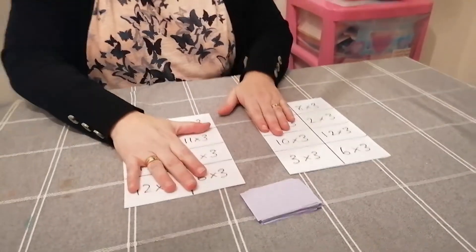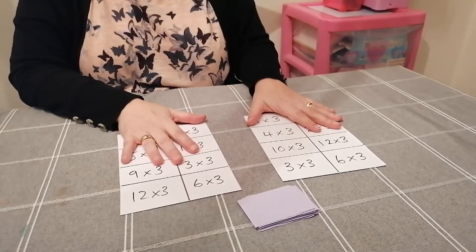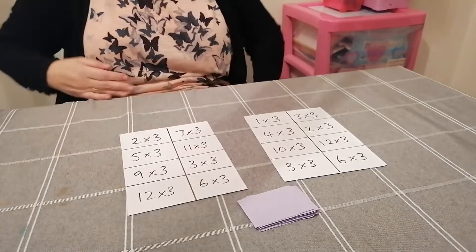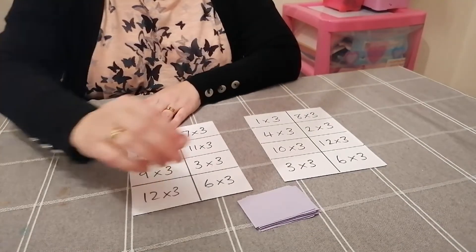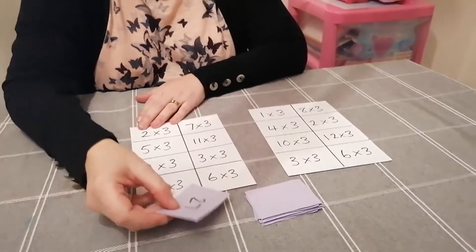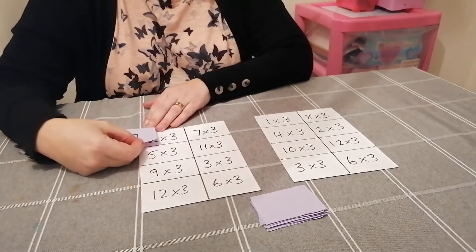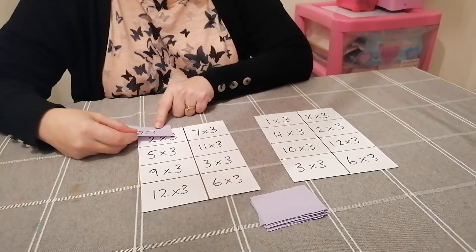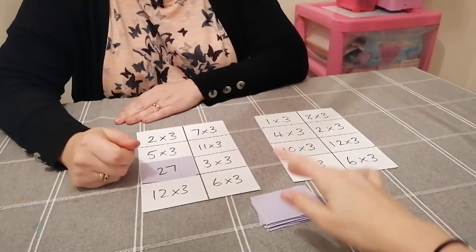Then we're going to take turns to play the game. Going first, I'm going to turn over an answer and see if it matches any of the facts on my times table bingo card. I know that nine times three is 27, and I've got that, so I can match that. Brilliant, Miss B, your turn.